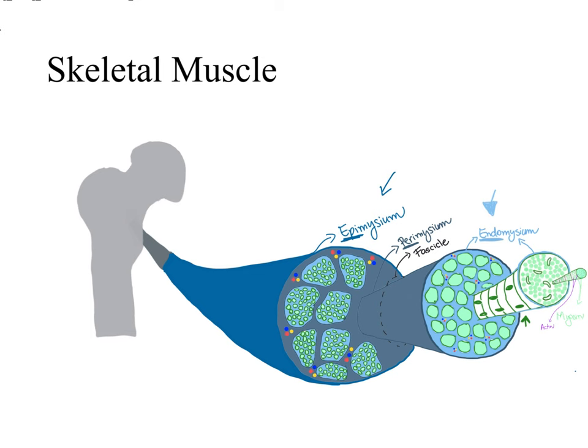Every single time we move our body around, we are contracting a skeletal muscle that's pulling on a bone in our skeleton. Since the attachment of the muscle with the bone is based on the fusion of the connective tissue in the muscle with the connective tissue surrounding the bone, this attachment is extremely strong and very hard to be pulled apart. That's why we can lift weights and our muscles don't just detach from the bones they are attaching to.